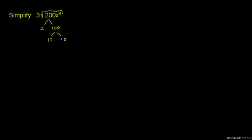200 is 100 times 2, and x to the power 3 is x squared times x. So we can rewrite this as the cube root of 2 times 100 times x squared times x. Since x squared times x gives us x to the power 3...